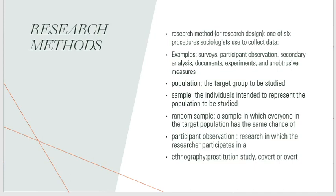If you get a random sample, that means every nth number is selected while giving everyone in the population an equal opportunity to be chosen. Participant observation includes the researcher being involved with groups, while unobtrusive measures does not. Ethnography — breaking it down: 'ethno' means group, 'graphy' means studying — so you're studying a group's culture. You can apply ethnography by being overt (obvious) or covert (hidden), so you can better understand their culture.